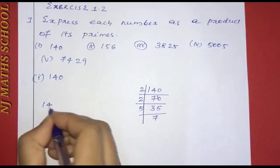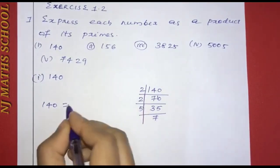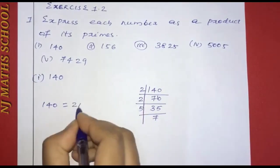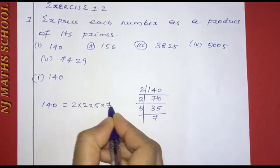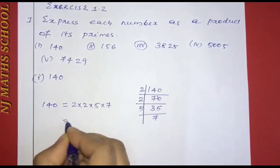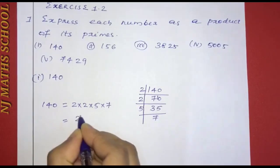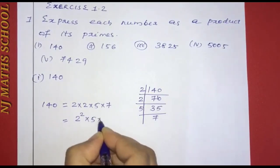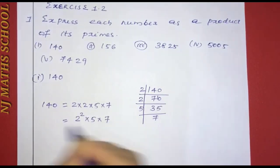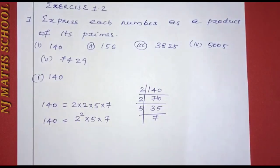Now, what do we need to do with 140? 140 is equal to 2 times 2 into 5 into 7. That is equal to 2 squared into 5 into 7.